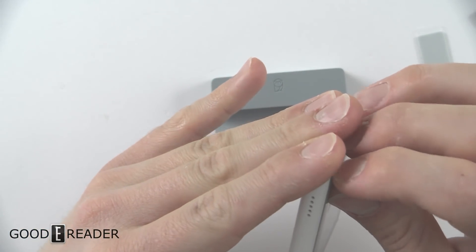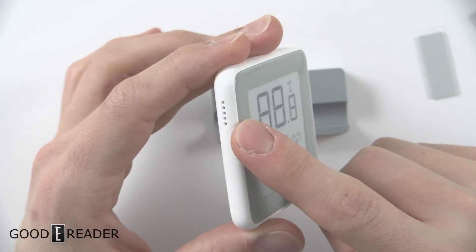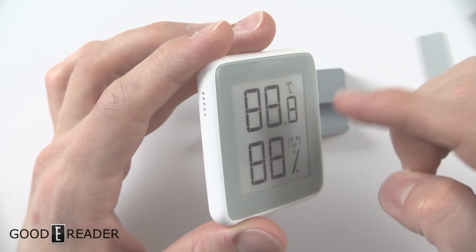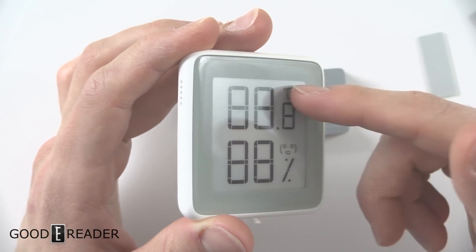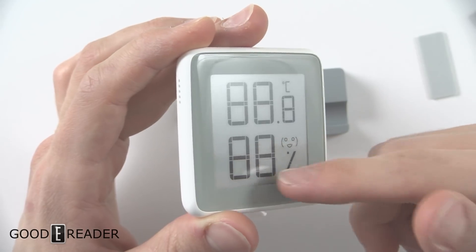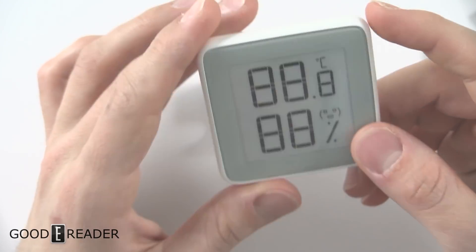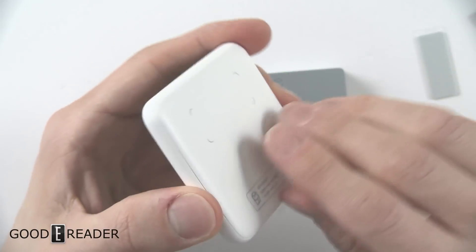You can't really take off the film because there's no film on it. That's the actual sensor where it breathes, so to speak, to measure the Celsius, Fahrenheit temperature and the percentage of the humidity.